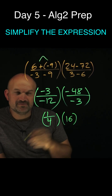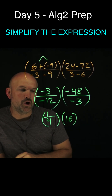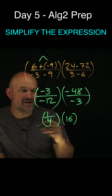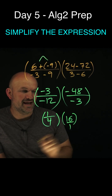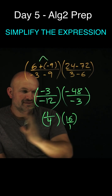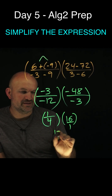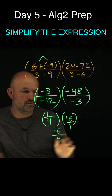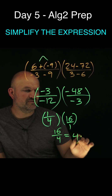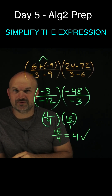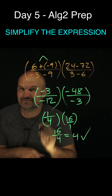Fractions mess up students all the time. Remember you can always think of an integer as over one. So if you multiply straight across, you have 16 over four, which is just going to equal four. Now you're ready for day six.